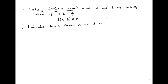Then we say events A and B are independent if the probability of A intersection B is the probability of A multiplied by the probability of B — meaning the happening of one event cannot affect the happening of the other.